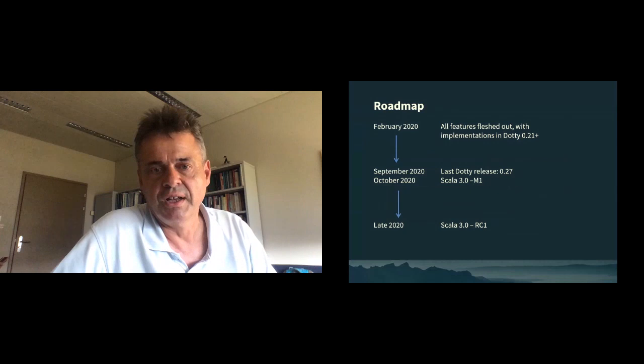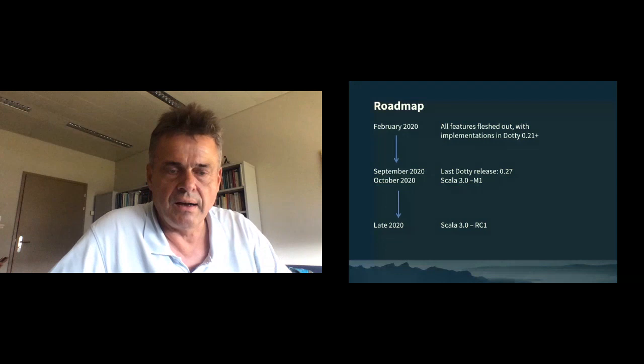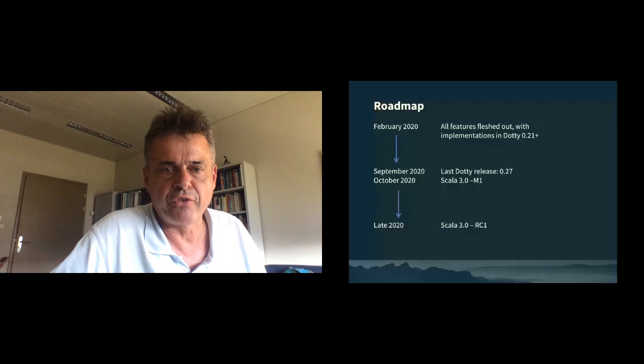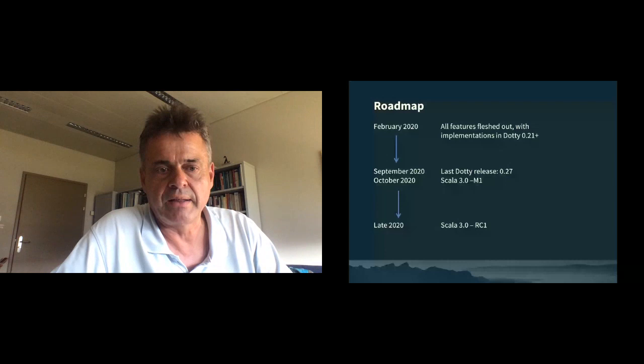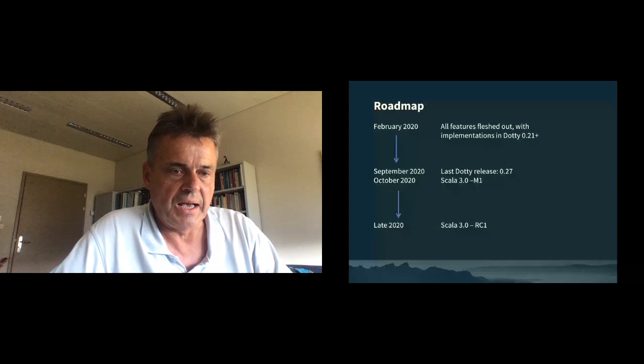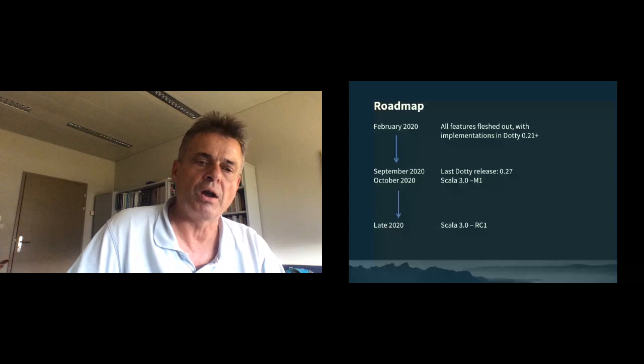We had in late August the last Dotty release. During all this time the project was called Dotty. The last Dotty release is 0.27 — we released one version every six weeks. In end of September, early October, we plan to have the first Scala 3.0 release. Beginning of October will be Scala 3.0 milestone one, which will hopefully lead to Scala 3.0 RC1 in late 2020. If the RC process goes well, we might already have a final release, but that's what we aim for.